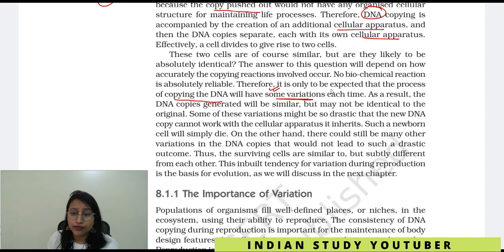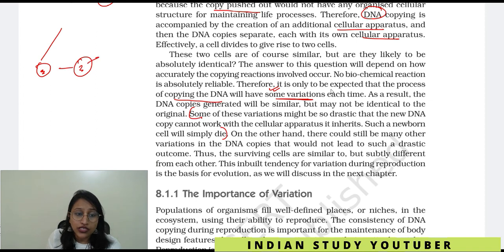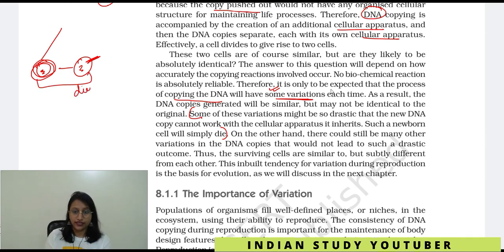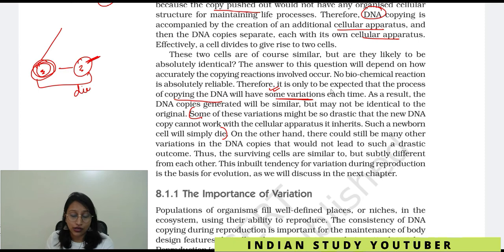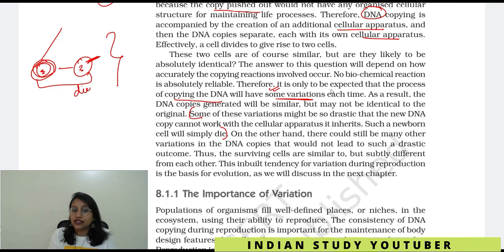Some of these variations might be so drastic that the new DNA copy cannot work with the cellular apparatus it inherits — such a newborn cell will simply die. Sometimes the change is so drastic in the copying mechanism that the new cell, which inherited the cell apparatus, is so different that it cannot work with the inherited cell apparatus and eventually dies. On the other hand, there could be many other variations in DNA copies that would not lead to such a drastic outcome.